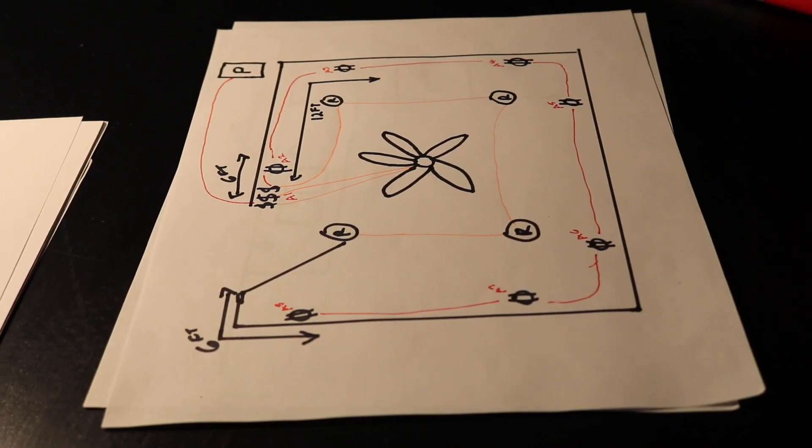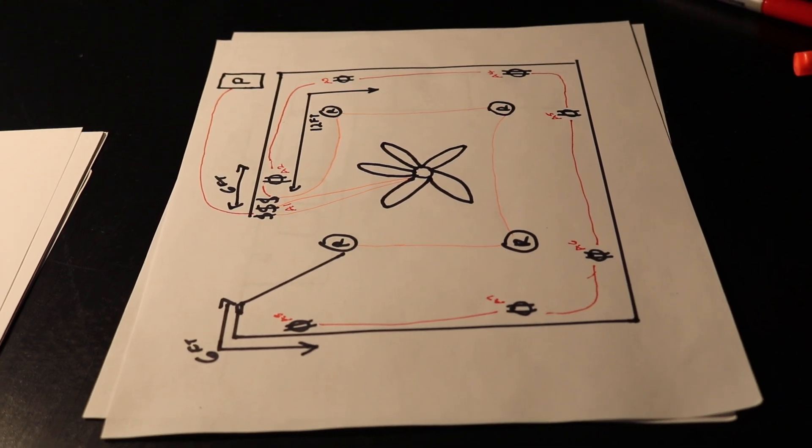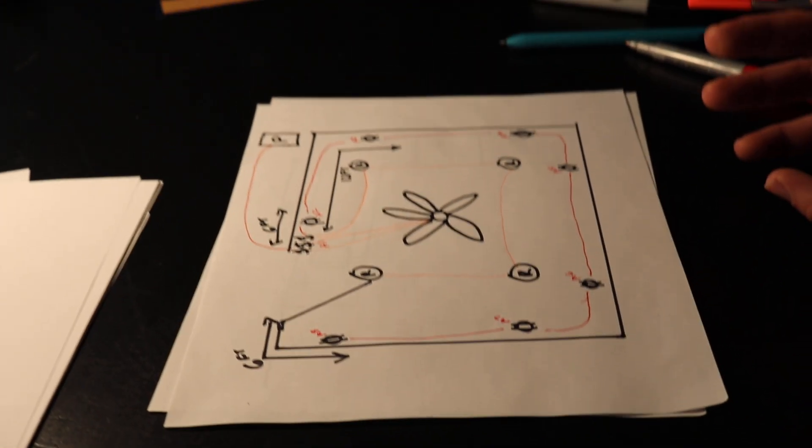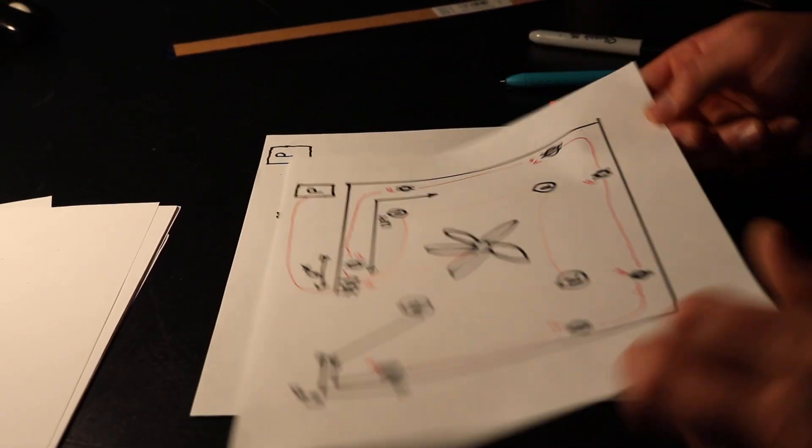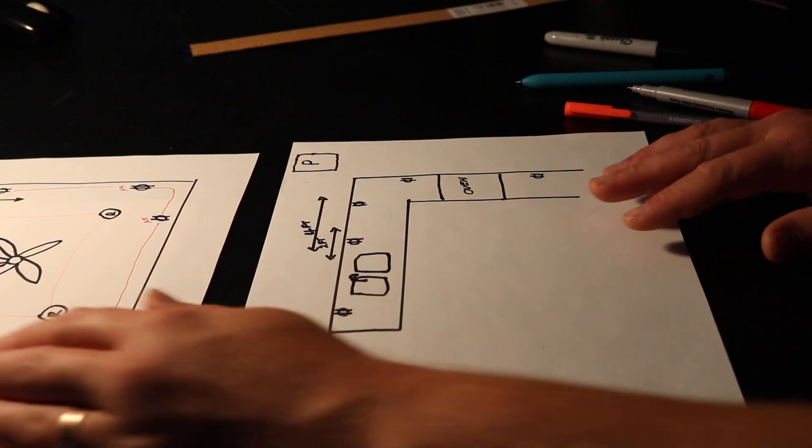It's fairly simple. It's a lot easier on paper, but that's how it's done. We're going to do one more. This is a residential kitchen.